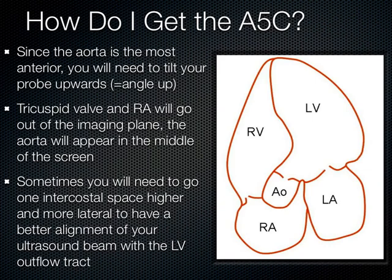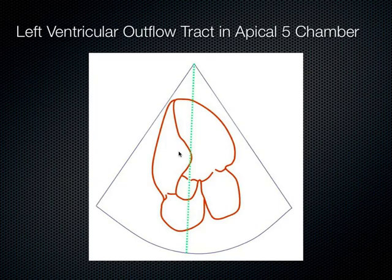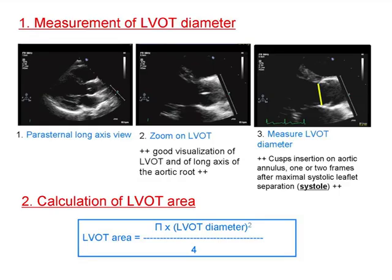The apical 5th chamber — air quotes around 'fifth chamber' since the heart only has four — refers to the aortic outflow tract. Tilting the transducer anteriorly causes the right atrium and tricuspid valve to exit the plane, revealing the LV outflow tract. You may need to go one intercostal space more superior and slightly more lateral to align the ultrasound beam with the LV outflow tract.